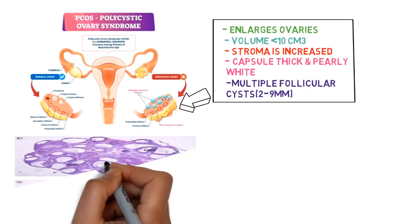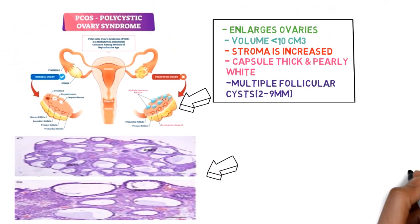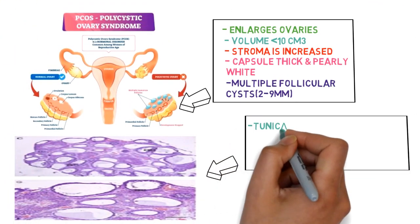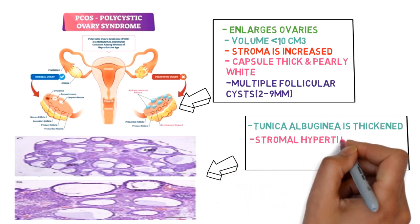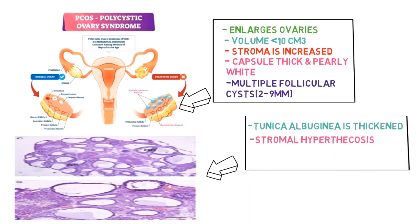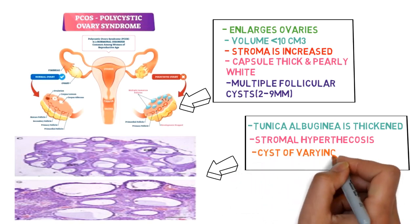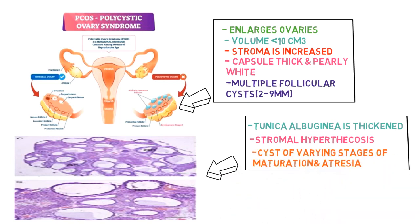The histology shows the tunica albuginea is thickened, the stromal hyperthecosis or theca cell hypertrophy, the cysts of the follicles of varying stages of maturation, and atresia is present.